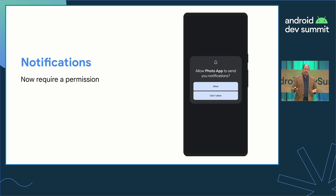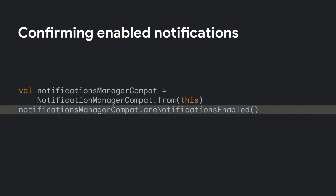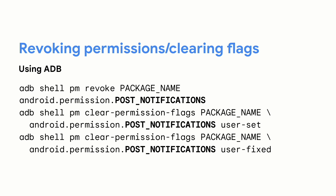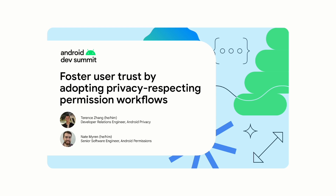If your app targets SDK 33 or higher, you get to manually ask the user for the notifications permission, giving you complete control over when the permission dialog is displayed. You can call areNotificationsEnabled — an AndroidX function — to confirm whether notifications are enabled for your app. Notifications related to media sessions are exempt from this behavior change, but foreground service notifications generally are not. You can use ADB to revoke permissions and clear permission flags for testing. Be sure to catch Terrence and Nate's talk for best practices on requesting permissions, including the new notification permission.